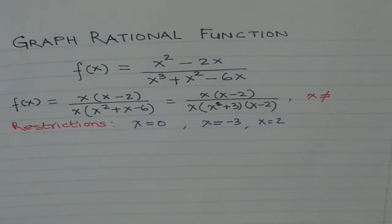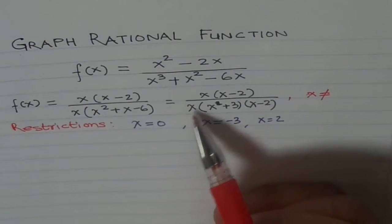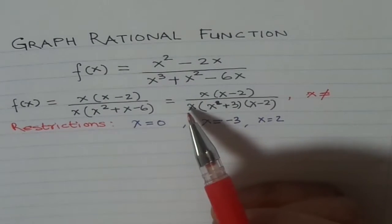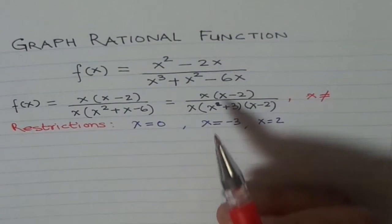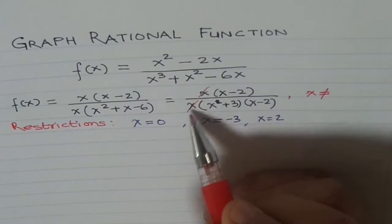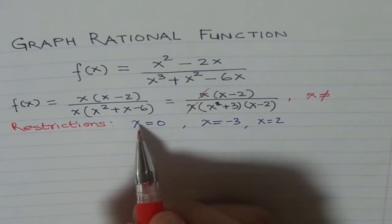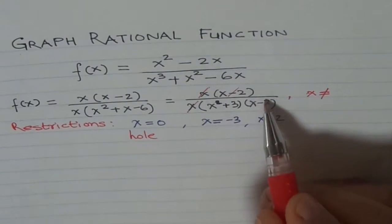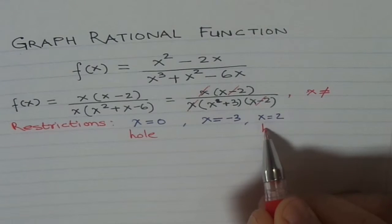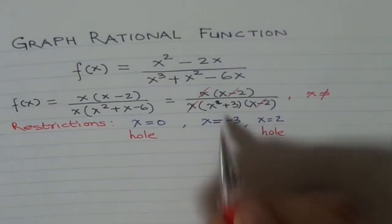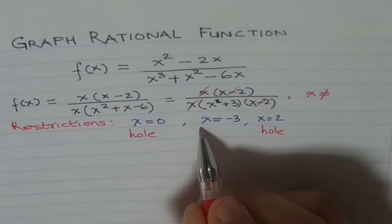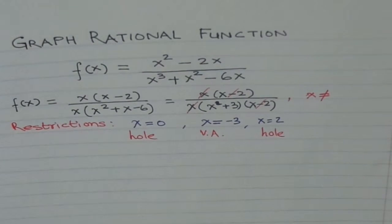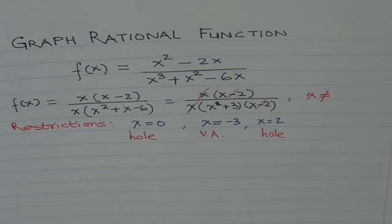Now these restrictions can lead to either vertical asymptotes or holes. If we have a common factor in the numerator and denominator, then we get a hole. So x in the numerator and x in the denominator are a common factor — this cancels out, yielding a hole. And x minus 2 in the numerator and x minus 2 in the denominator will also cancel out, giving us another hole. The remaining factor x plus 3 will give us a vertical asymptote — vertical asymptote at x equals minus 3.